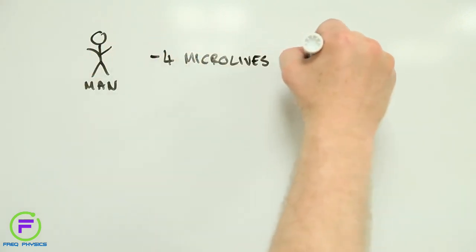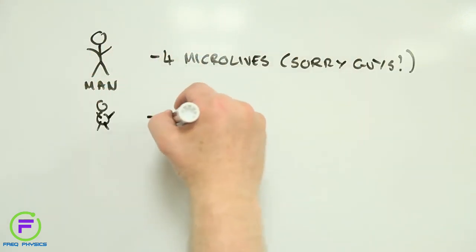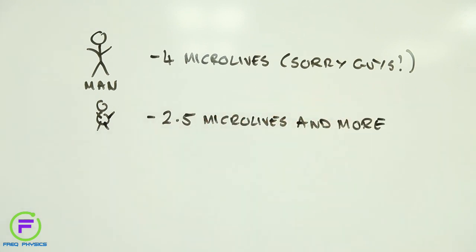Most things we do can be expressed as Microlives. Being a man rather than a woman, for instance, will cost you 4 Microlives. Being considerably overweight could cost you upwards of 2.5 Microlives. Eating a portion of red meat will cost you 1 Microlife, as will watching 2 hours of TV.